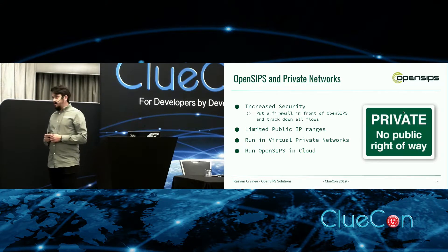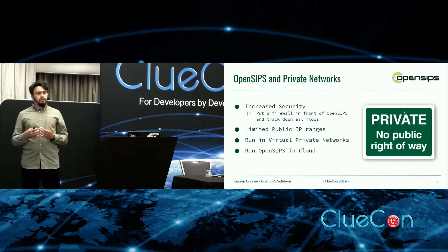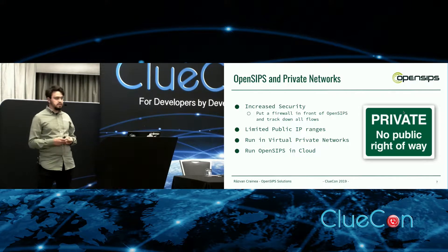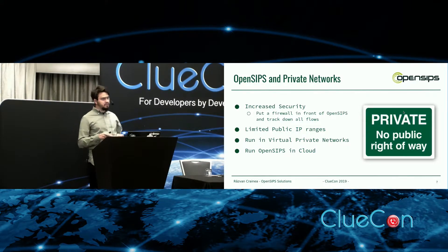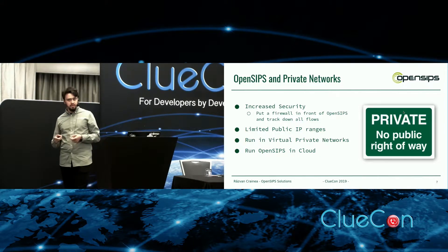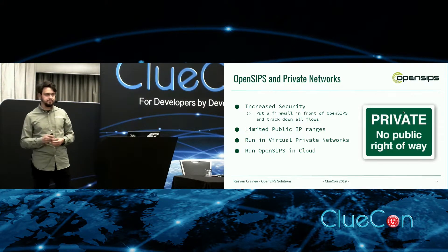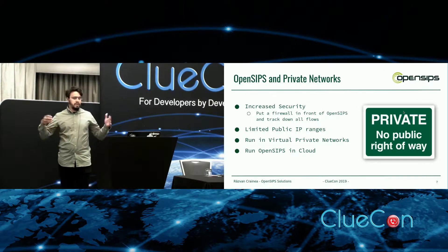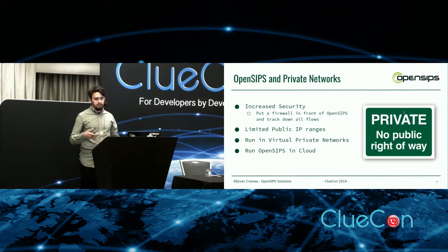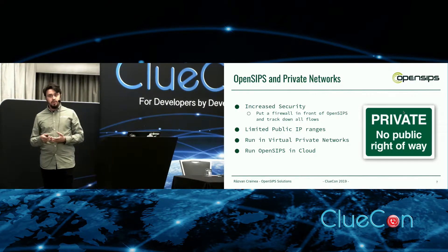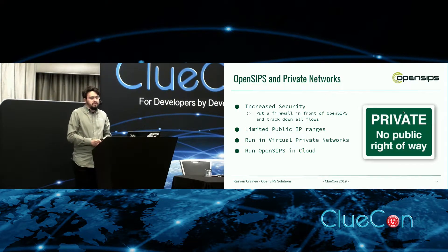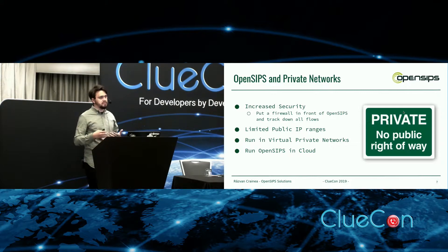So the question is: why would you set up OpenSips in a private network? First of all, it offers an extra layer of security. If you don't have a public IP, it might be a bit harder for any attackers to reach your network and OpenSips service. You might also run OpenSips in an environment where you have limited access to public IPs — we all know that IPv4 has run out.